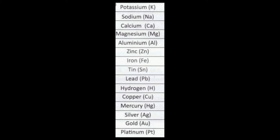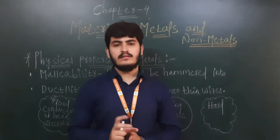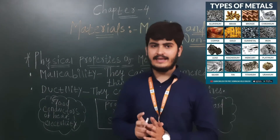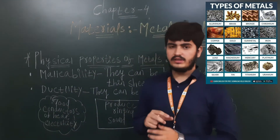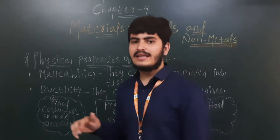Iron is Fe, tin is Sn, lead is Pb, hydrogen is H, copper is Cu, mercury is Hg, silver is Ag, gold is Au, platinum is Pt. You have to keep all these chemical symbols in mind. So now it's time to start with the topic of physical properties of metals.